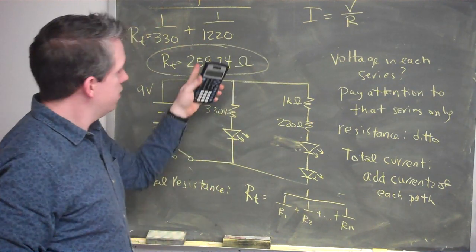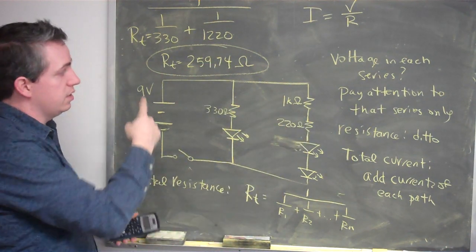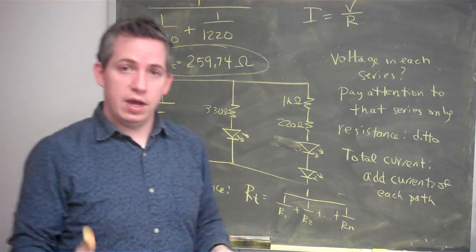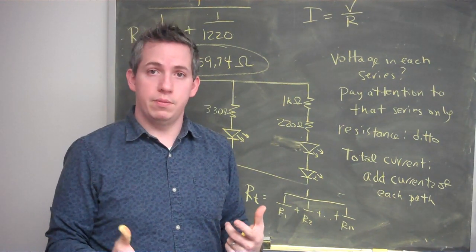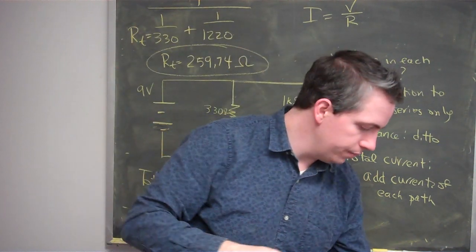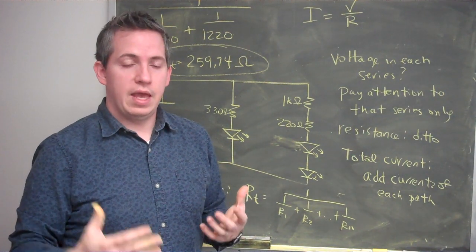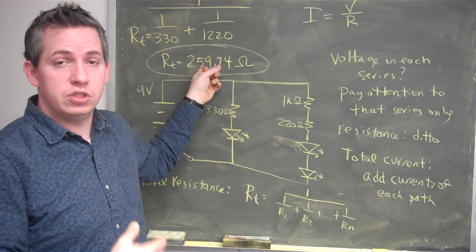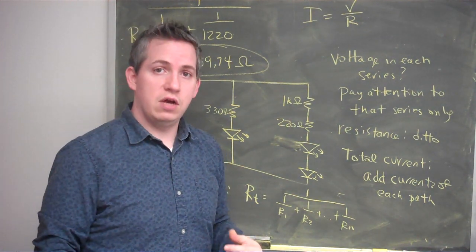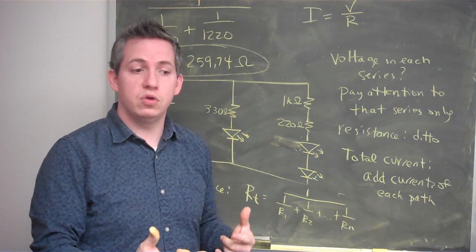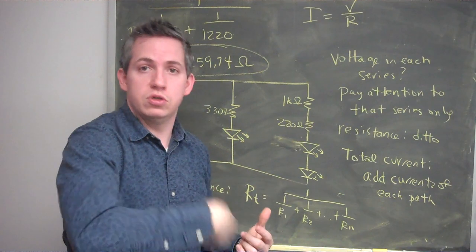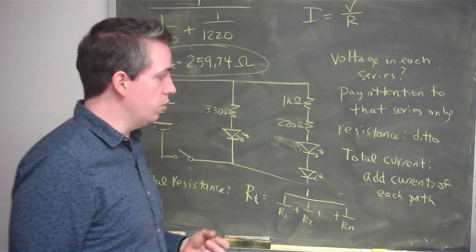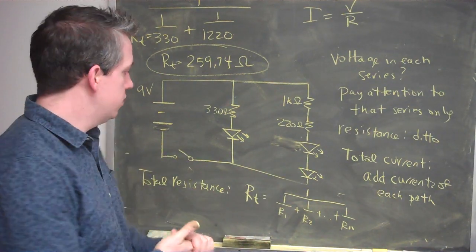Notice that 259.74 ohms is smaller than either individual resistance. So the total resistance on the line is actually quite small, and the total current is the sum of the currents, so it's fairly large. This is the reason why in your house you don't want to plug too many things into the same electrical circuit breaker. As you add resistors in parallel, you're actually decreasing the total resistance. When resistance goes down, total current goes up. If the current goes up too high, electricity runs too fast through those wires and starts to burn them — that's why we have circuit breakers. They open up and stop the flow of electricity.